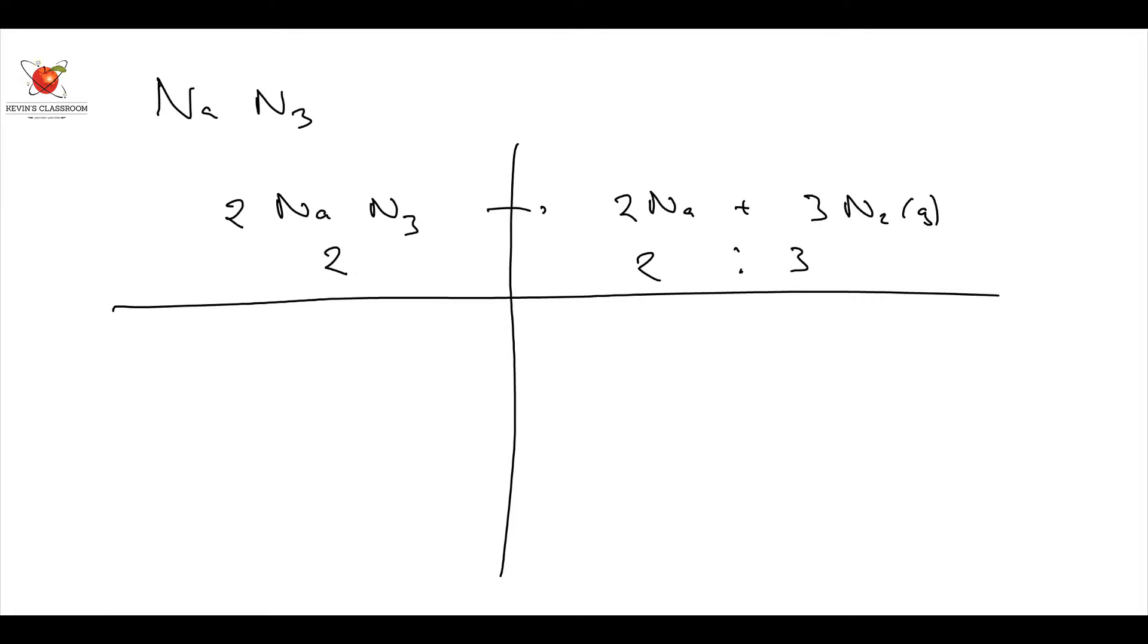That's what we do. We put down what we are given. They said we have 120 grams of 85% pure. So we start off by saying we've got 120 grams of 85% pure sodium azide. And they've asked us, if it decomposes into its elements, elements being Na and N2.